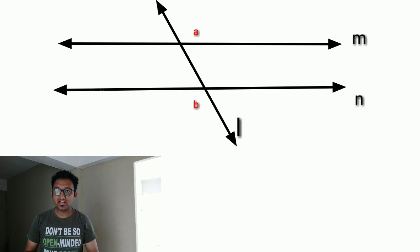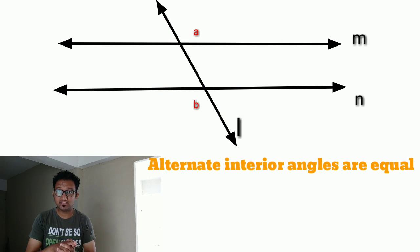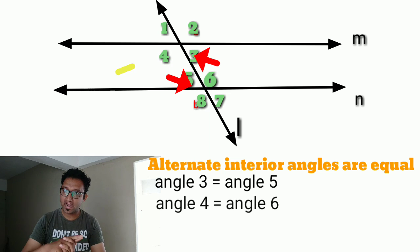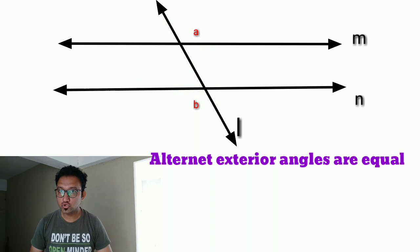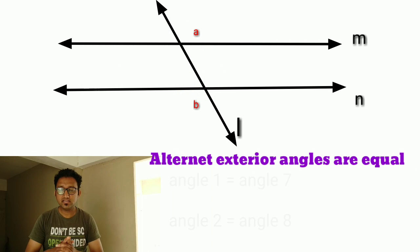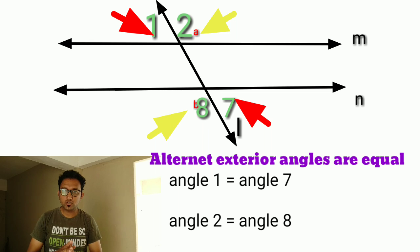Alternate interior angles are equal: angle 3 equals angle 5, angle 4 equals angle 6. Same way, alternate exterior angles are also equal: angle 1 equals angle 7, and angle 2 equals angle 8. So in this project, we are going to prove and show these properties on the model.